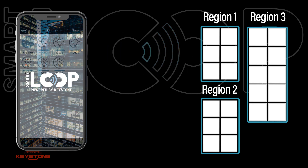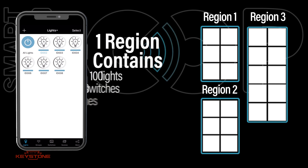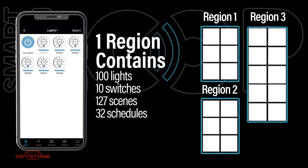Each region can contain up to 100 lights, 10 switches, 127 scenes, and 32 schedules.